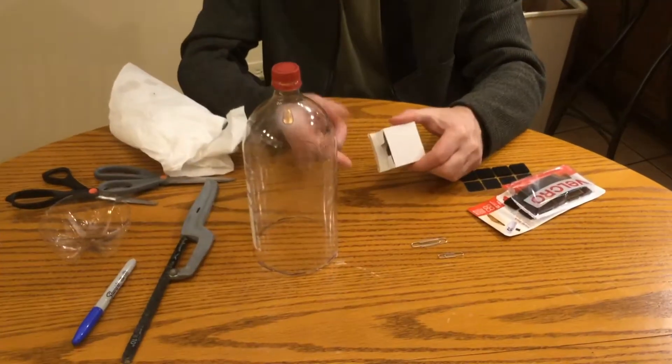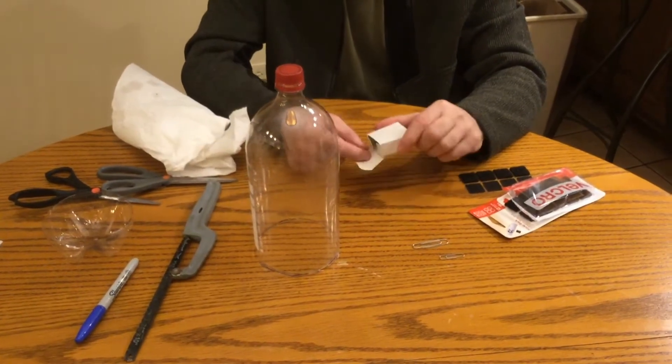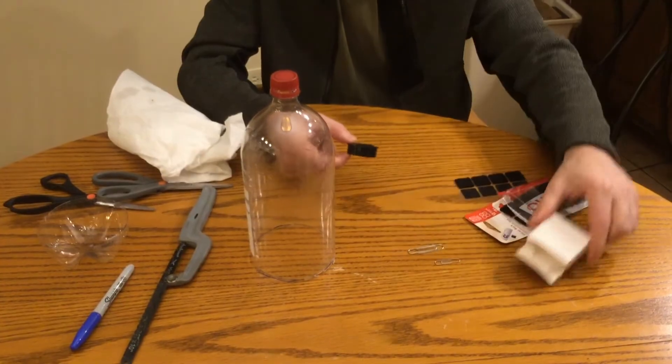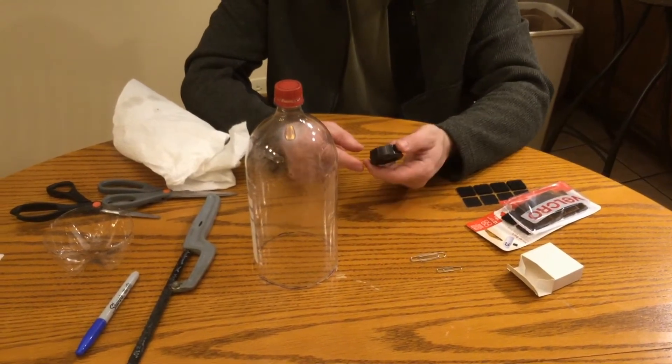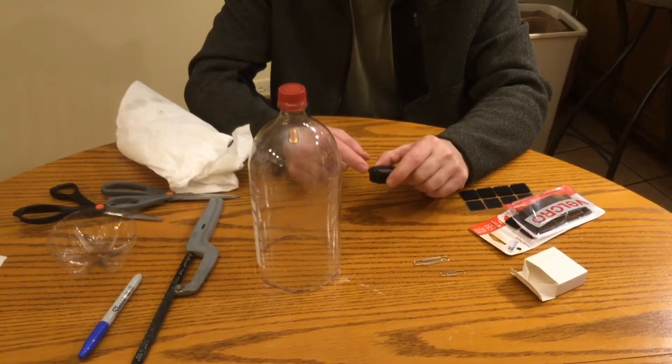All right, next thing we're going to do is show how to attach the humidity probe to the inside of the two-liter bottle so it can be easily removed between class periods.